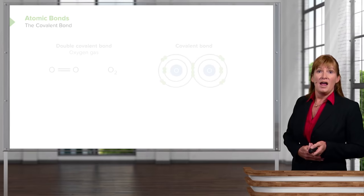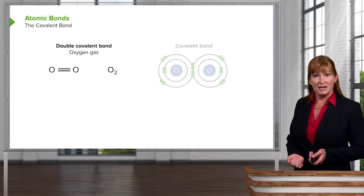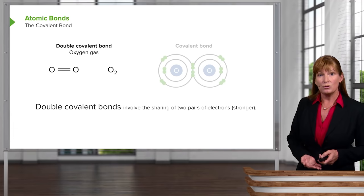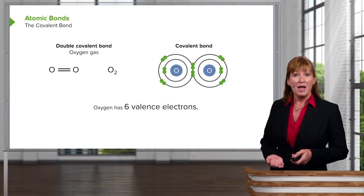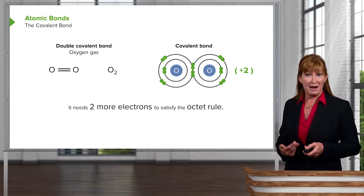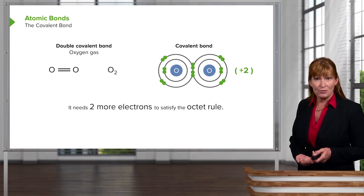Next, we'll look at a double covalent bond — sharing two pairs of electrons. In this case, we'll use oxygen as an example. Oxygen has six valence electrons, which means that to satisfy the octet rule, it would like to have another two electrons in its valence shell. It can satisfy the octet rule simply by sharing two electrons with one other oxygen — so oxygens now have two pairs of shared electrons in the valence shell: four of their own plus two pairs of shared equals eight, satisfying the octet rule. Now, let's look at a triple covalent bond. Nitrogen has five valence electrons, and to be satisfied it would like three additional electrons. A triple covalent bond involves the sharing of three pairs of electrons. It is the strongest of the bonds we'll be looking at in this course.